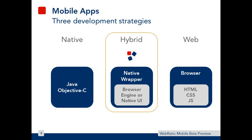Developing a native mobile application means that for every platform you have a different programming language. For Android, you develop using Java code. For iOS, you develop in Objective-C. For Windows Phone, you develop in C#. This means you have to learn different languages according to the platform you want to target.